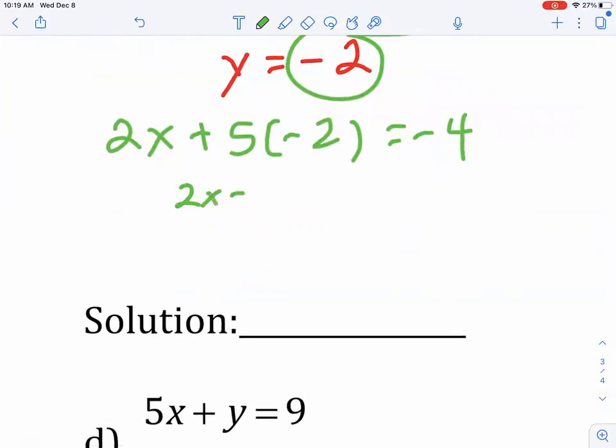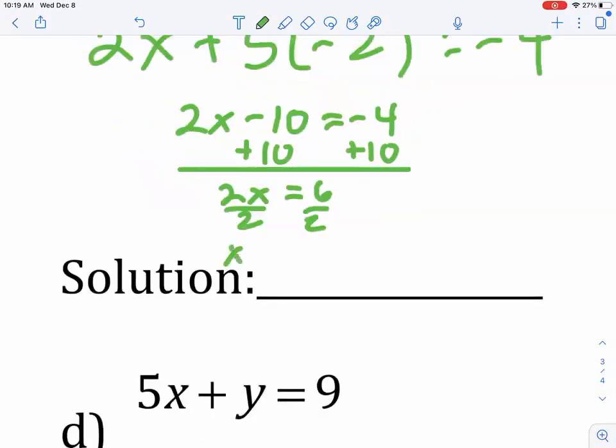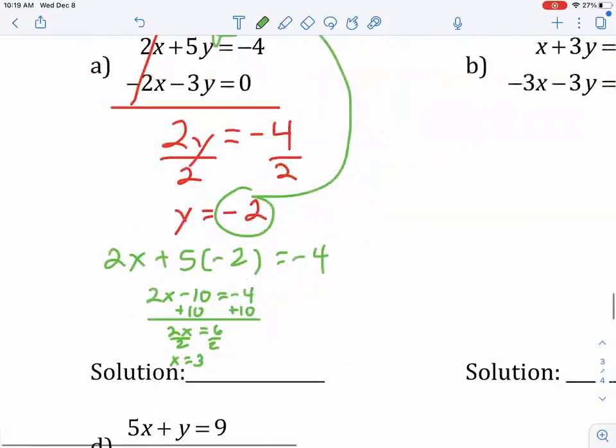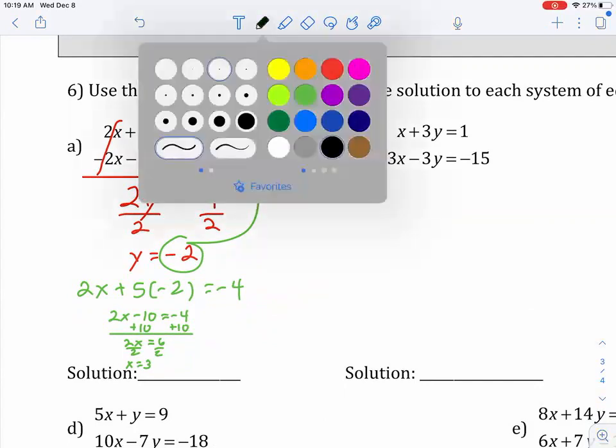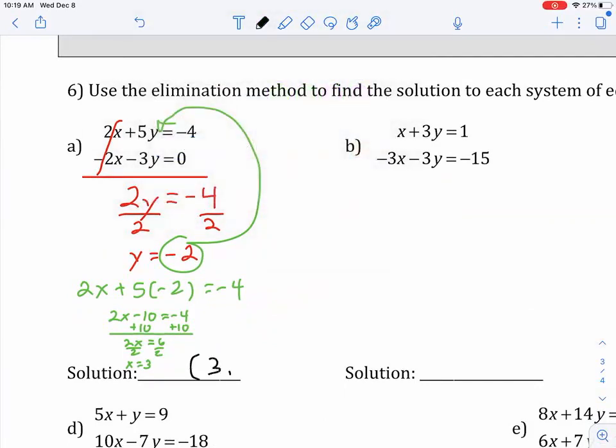Okay, so I just took that negative 2, I plugged it into the top, and now I'm going to be able to solve for X. So, I get 2X minus 10 equals negative 4. I'll add the 10 to both sides. And I get 2X equals 6. And so, my solution is 3 comma negative 2. My X was 3, and my Y was negative 2.